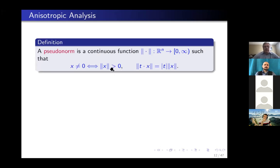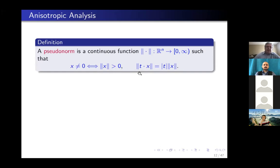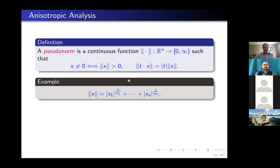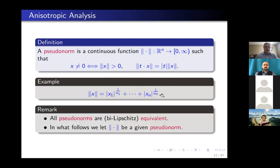I call a pseudo-norm a continuous non-negative function that is positive away from 0 and is homogeneous with respect to the anisotropic dilation — meaning it scales by T under δ_T. For instance, you can take a specific pseudo-norm; in fact, all pseudo-norms are equivalent, so the precise choice of pseudo-norm is not important for this talk. In what follows, we fix some pseudo-norm.